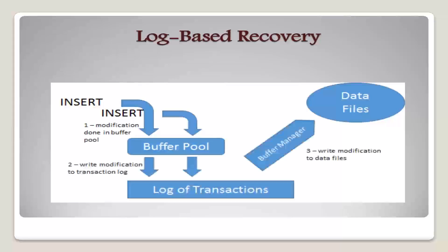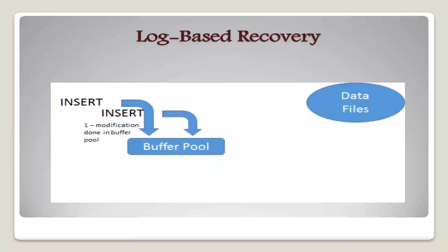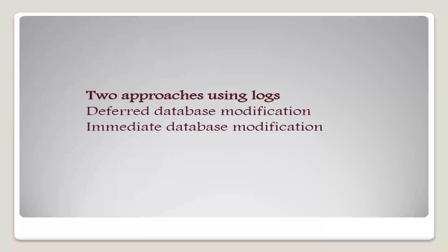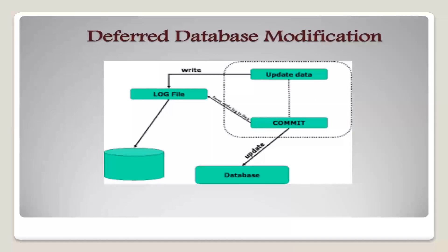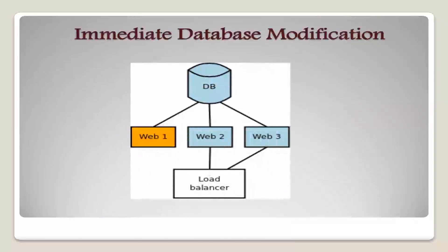We assume for now that log records are written directly to stable storage. Two approaches for using logs are deferred database modification and immediate database modification. The deferred database modification scheme records all the modifications to the log but defers all the writes to after partial commit, whereas immediate database modification scheme allows database updates of an uncommitted transaction to be made as the writes are issued. Since undoing may be needed, update logs must have both old value and new value.